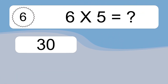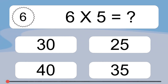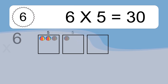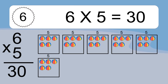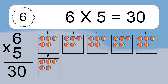Six times five equals what? Six times five equals thirty. We have six boxes, and each box has five colorful balls inside. If you count all the balls in all the boxes together, you will have six times five balls. This equals thirty balls.